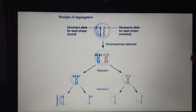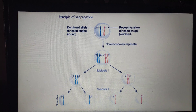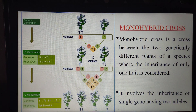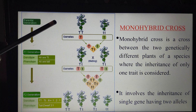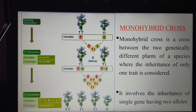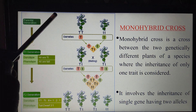We shall discuss the principle of segregation in much more detail in the next video. One thing we have to keep in mind is that during gamete formation, only one allele will enter into the gamete. Now let us enter into the explanation for the chart. Mendel performed his monohybrid cross using Pisum sativum — the pea plant — and he selected seven different contrasting characters.